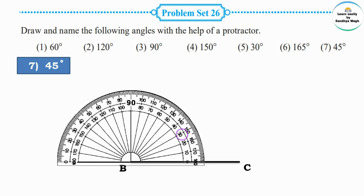Counting: 20 degrees, 30 degrees, 40 degrees. The 40 degree marking is here, but we need to draw a 45 degree angle. So count the small markings after 40 degrees: 41, 42, 43, 44, and 45 degrees. Mark a point at 45 degrees.